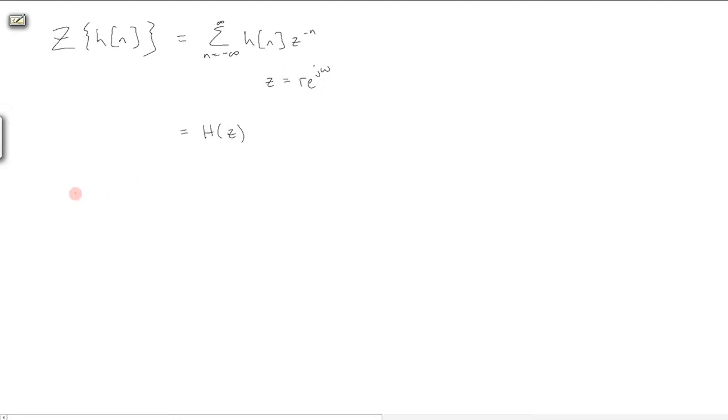Specifically, H of N minus N0, going through the Z-transform, corresponds to Z to the minus N0 times the Z-transform of H.